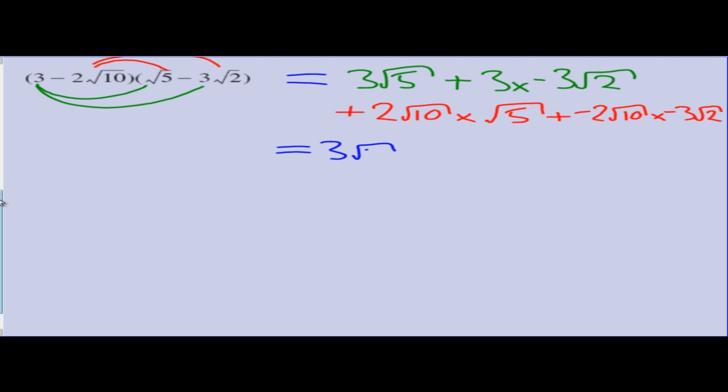3 root 5 can stay as 3 root 5. Now we have 3 times negative 3 root 2. So a positive times a negative is going to give us a negative. 3 times 3 is 9 and the square root of 2 stays the square root of 2. Plus, now that should have been a negative in there, which means we have a negative times a positive, so we're going to have a negative here. And we're going to have 2 times the 1, so the 2 out the front, and a 50 under the square root sign.